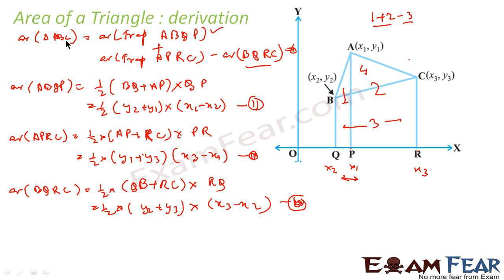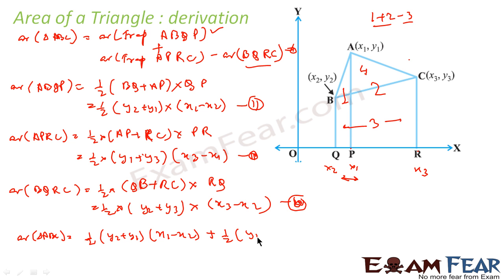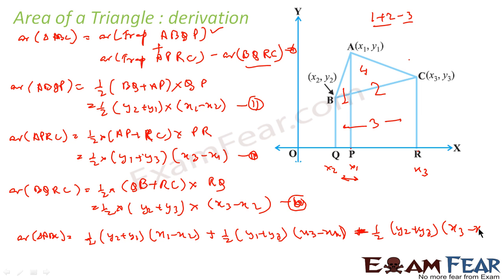Now combining these, area of triangle ABC = area of trapezium ABPQ + area of trapezium APRC − area of trapezium BQRC = 1/2(y2 + y1)(x1 − x2) + 1/2(y1 + y3)(x3 − x1) − 1/2(y2 + y3)(x3 − x2).